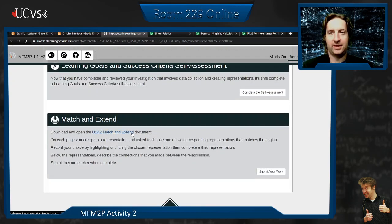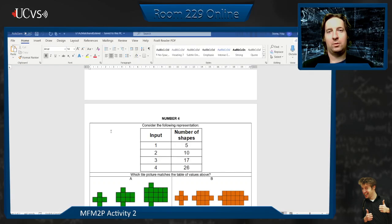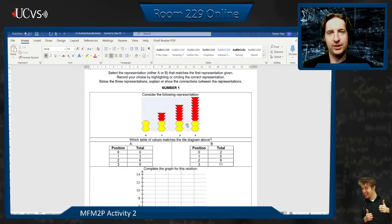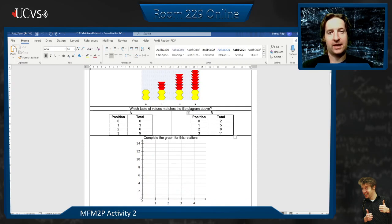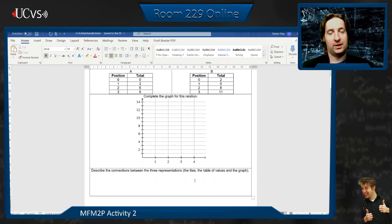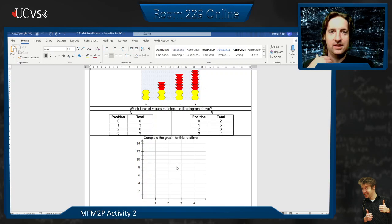But what we want to do, the big idea, the big assignment here, is this match and extend. So I think I have it open here. What it's asking you to do, I think there's six different ones. For each of these things, they're going to give you a representation. So here's a pattern. I've got two yellow hexagons. And then each time I'm adding three trapezoids. Okay? So which of these tables of values represents this picture? And then once you pick the right one, A or B, we're going to then represent it now as a graph. You're going to take your data and put it on a graph. And then I'd like you, in words or tiles or however you want, describe the connection here between these things. What's the connection between this tile diagram, the table of values, and the graph? What's the thing that sort of connects them? What's the idea that connects them?